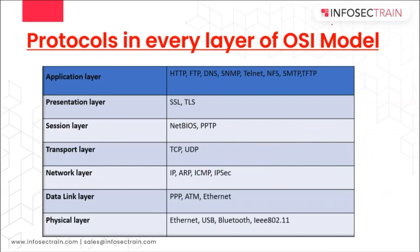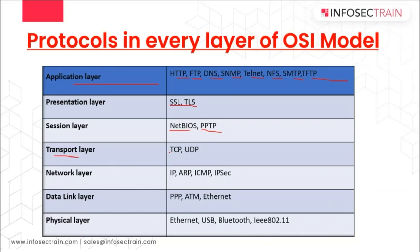To summarize the protocols at various layers: Application Layer protocols include HTTP, FTP, DNS, SNMP, Telnet, NFS, SMTP, and TFTP. Presentation Layer handles encryption and decryption via SSL and TLS. Session Layer uses NetBIOS and APIs to maintain sessions; PPTP can also be there. Transport Layer uses TCP and UDP. Network Layer includes IP, ARP, ICMP, IGMP, and IPsec. Data Link Layer uses Point-to-Point Protocol, Ethernet, and ATM. Physical Layer includes Wi-Fi, USB, and Ethernet cables.